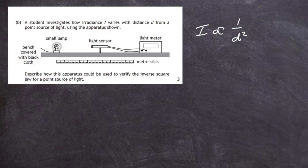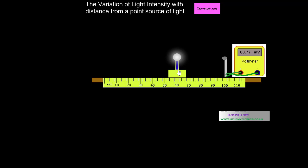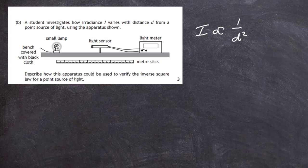The inverse square law is given as I the irradiance is directly proportional to 1 upon d squared. All we have to do in this situation is vary the point source of light from the light sensor, record the distance it is from the light sensor, and also record the irradiance which is matching up with the voltmeter or the light meter reading if it's attached and calibrated.